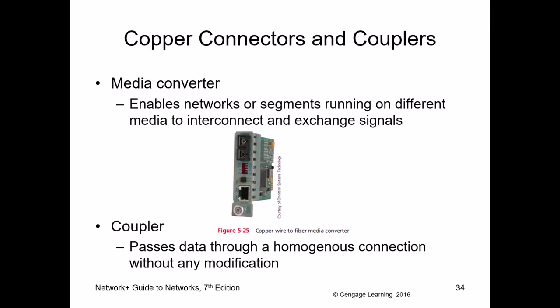A media converter converts data from one medium to another — for example, it converts an RJ45 copper signal into light so you can connect to fiber. It connects an unshielded twisted pair cable to a fiber optic cable. A coupler passes data through a homogeneous connection without modification — it's like a repeater.